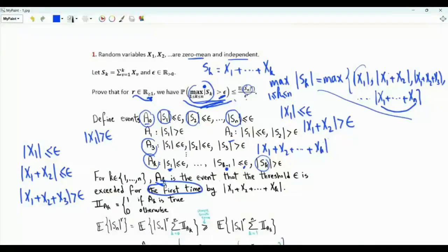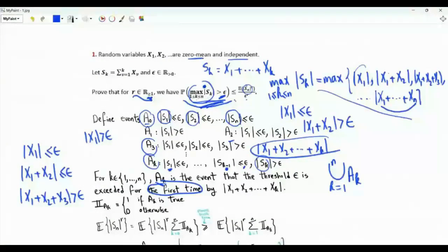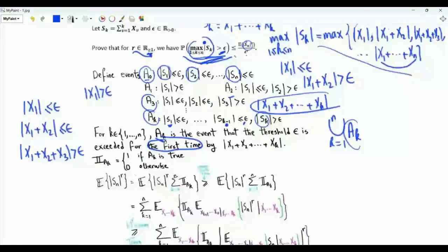Note that the event of interest is the union for k from 1 to n of A_k, because if the maximum exceeds epsilon, then the threshold is exceeded for the first time by |S_1|, or |S_2|, or |S_3|, and so on. These events are mutually exclusive.